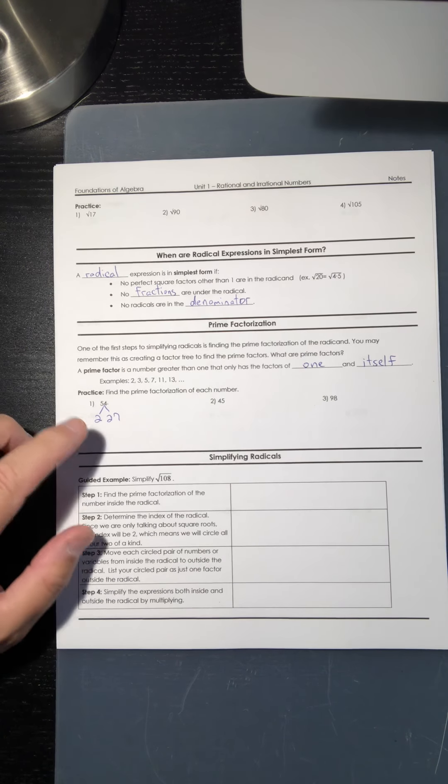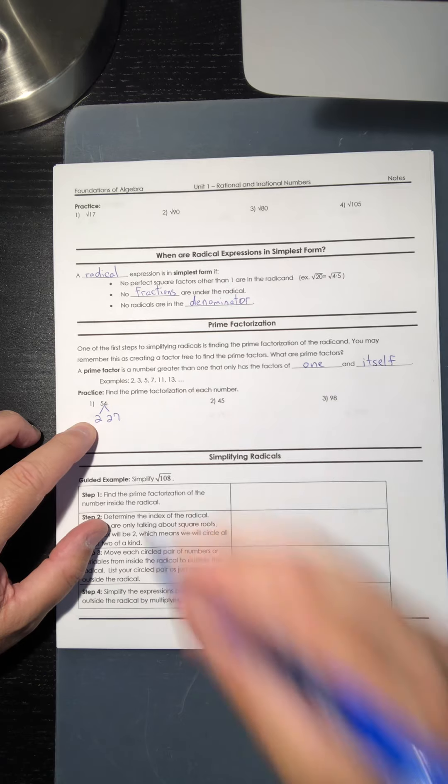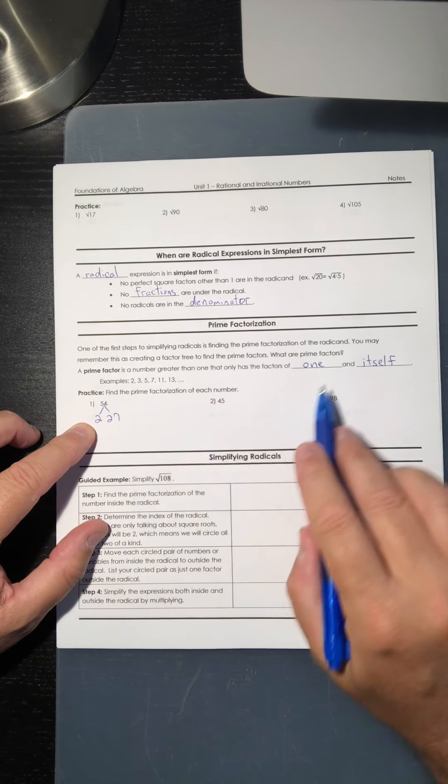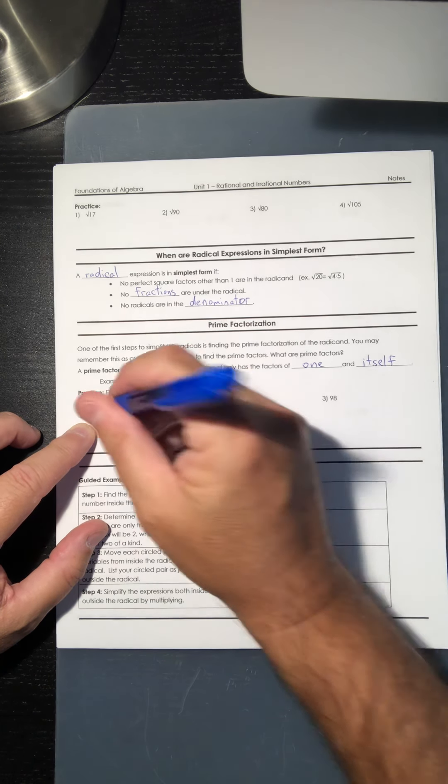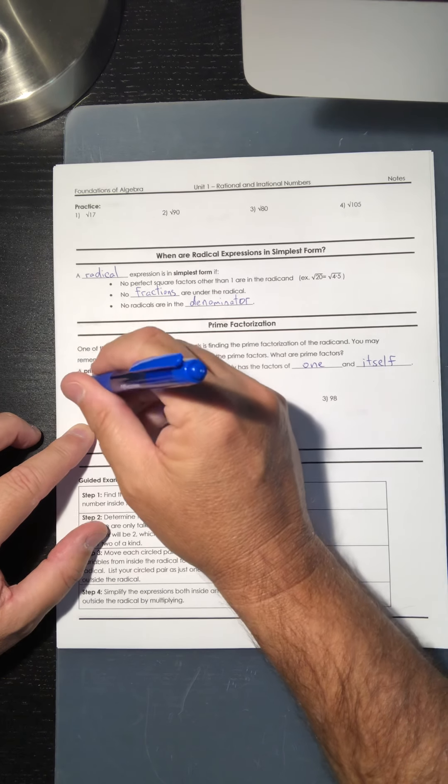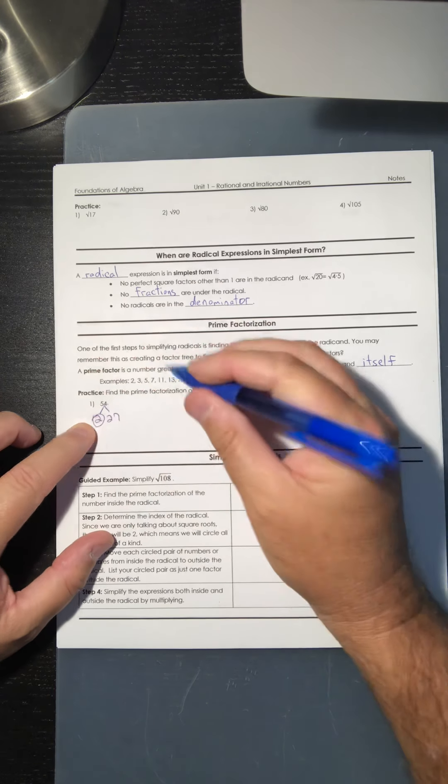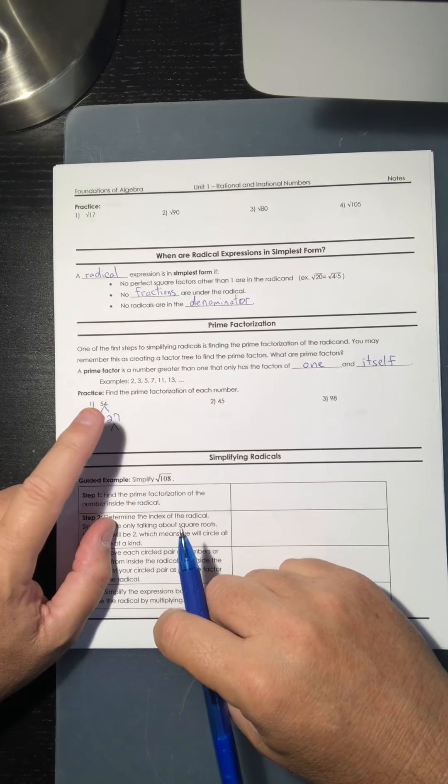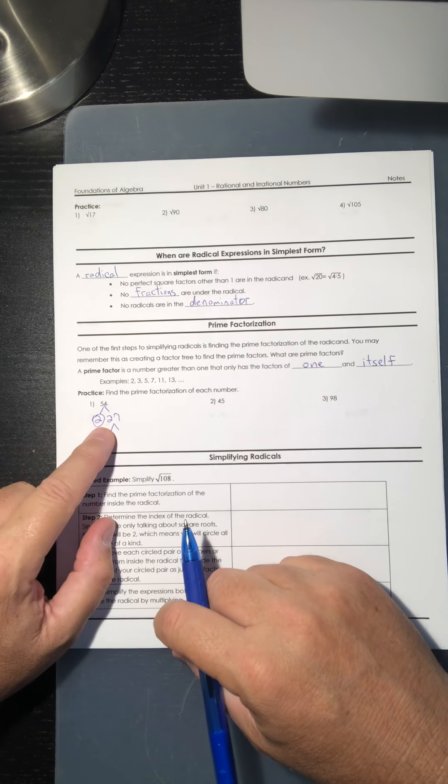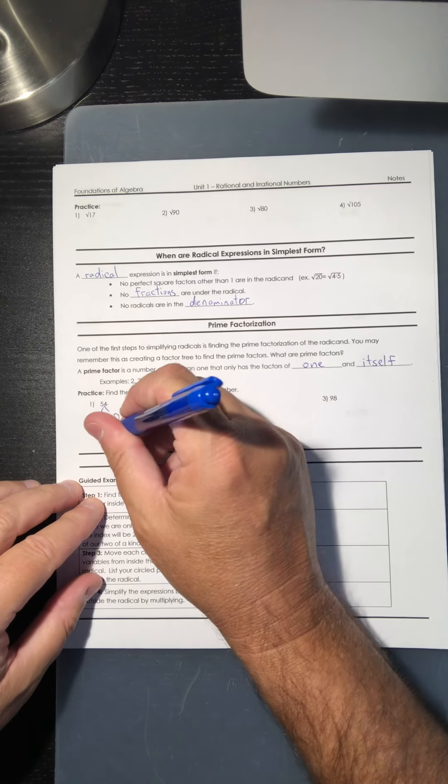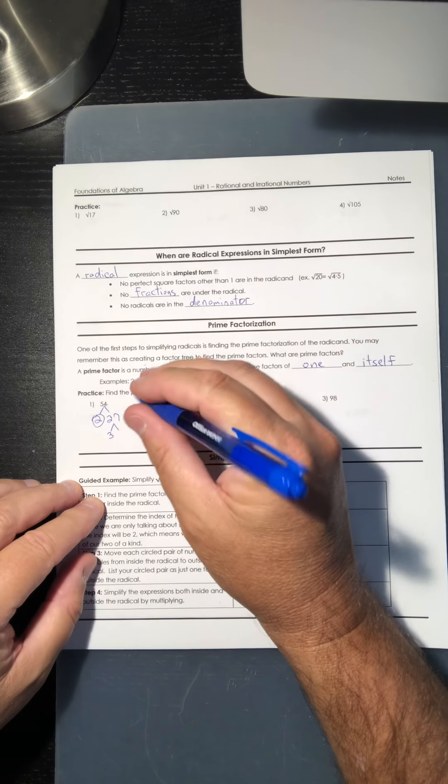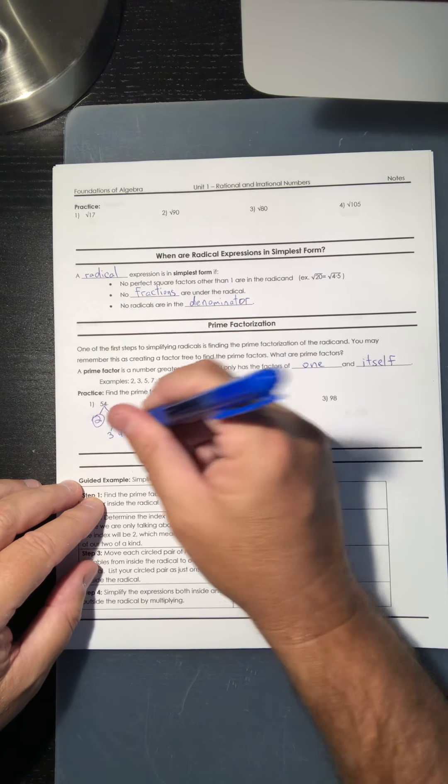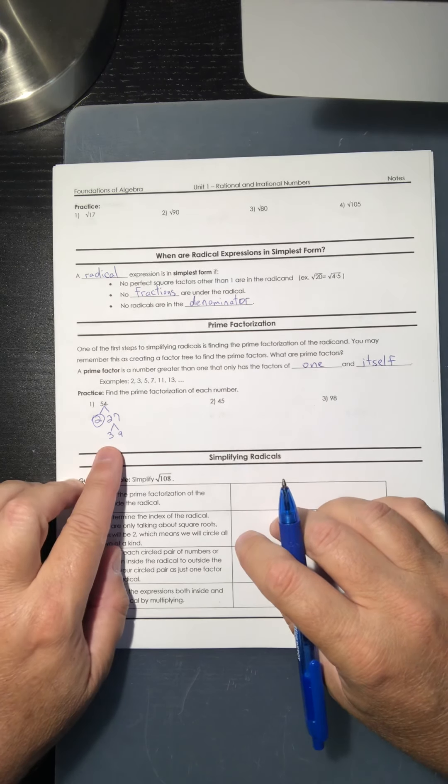All right, so 2 is prime. The only numbers that go into 2 are 1 and itself, so we're finished with that. We're going to circle that 2. 27, there's some more numbers that go into 27. 2 does not go into 27 because it's not even, but 3 does.